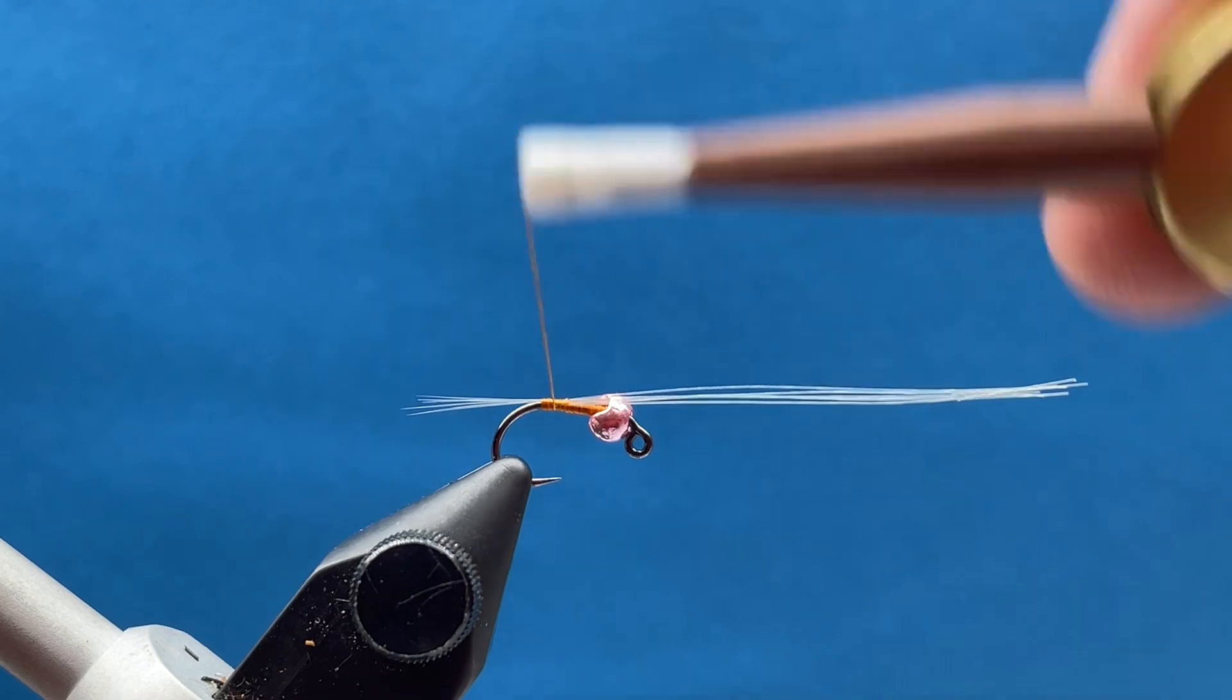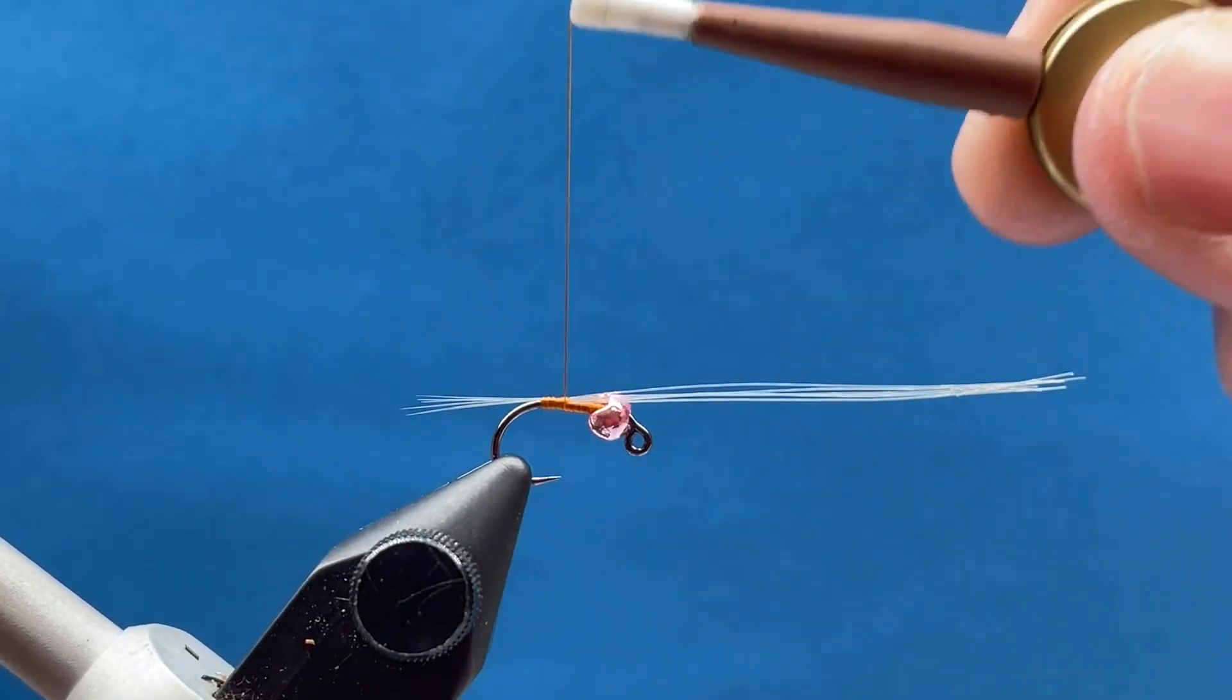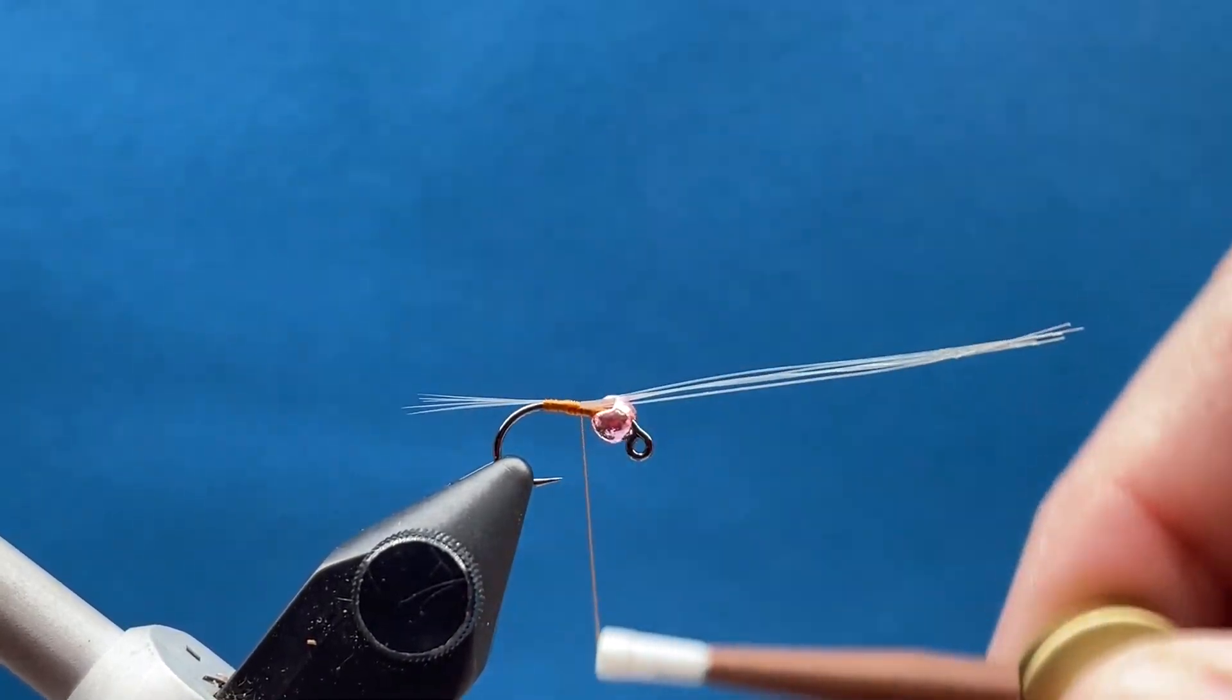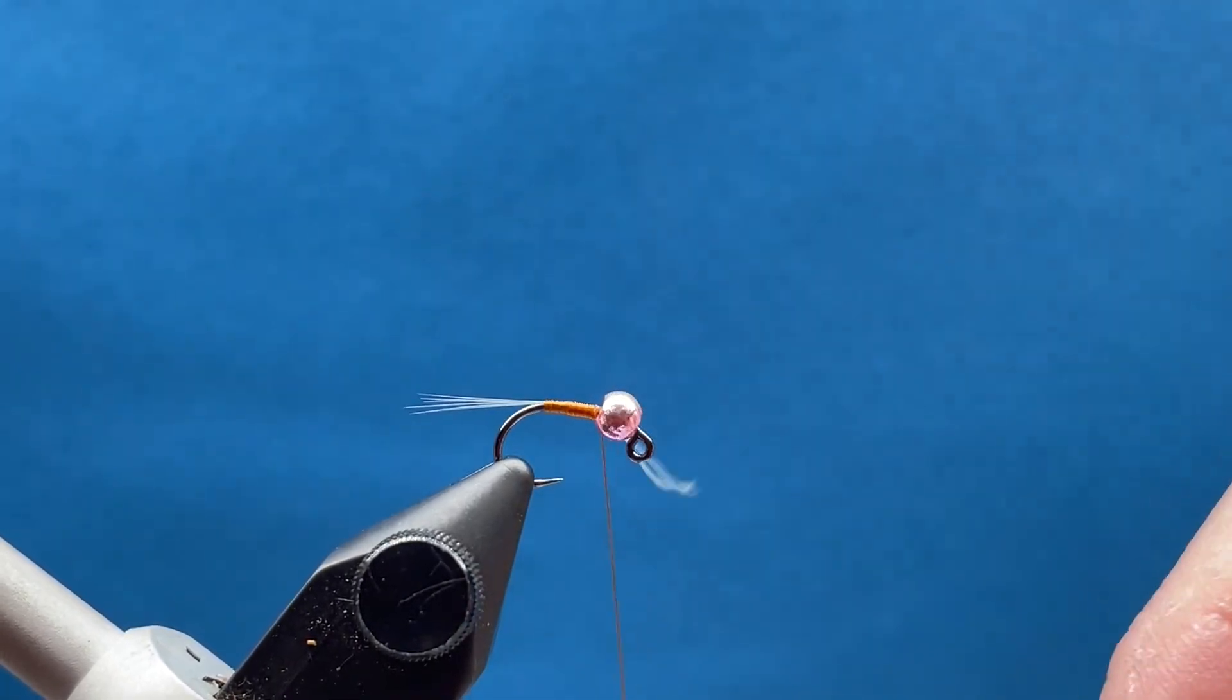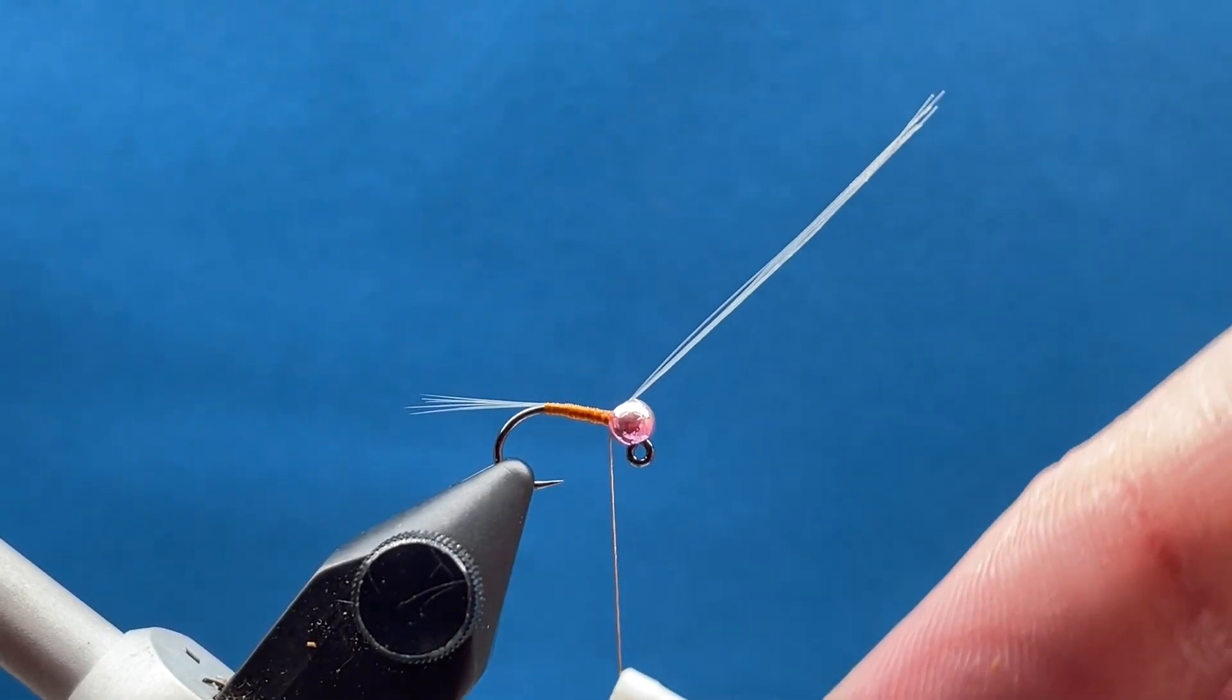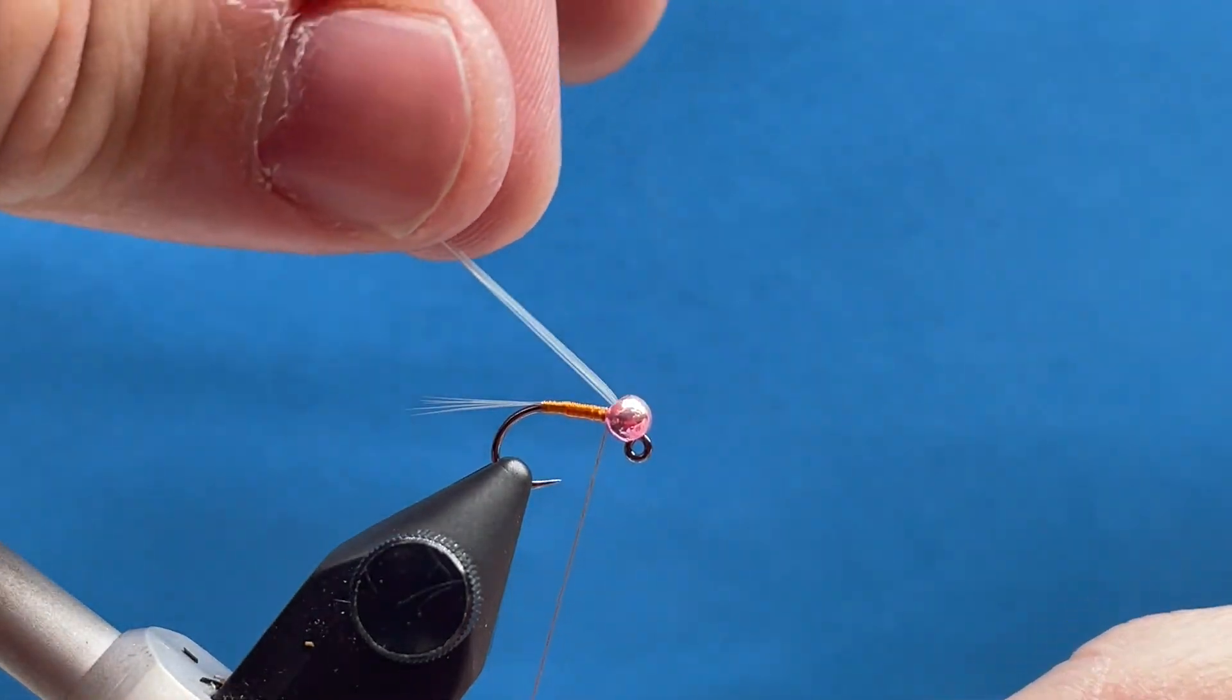As you notice, this is a thread-bodied style fly, so I want to make sure all my thread wraps really count here. I'm just going to do one wrap right in front of the other, and I'm going to push these micro fibets right up here, almost into that slot of that bead, and really anchor them down. I'm going to fold them back.